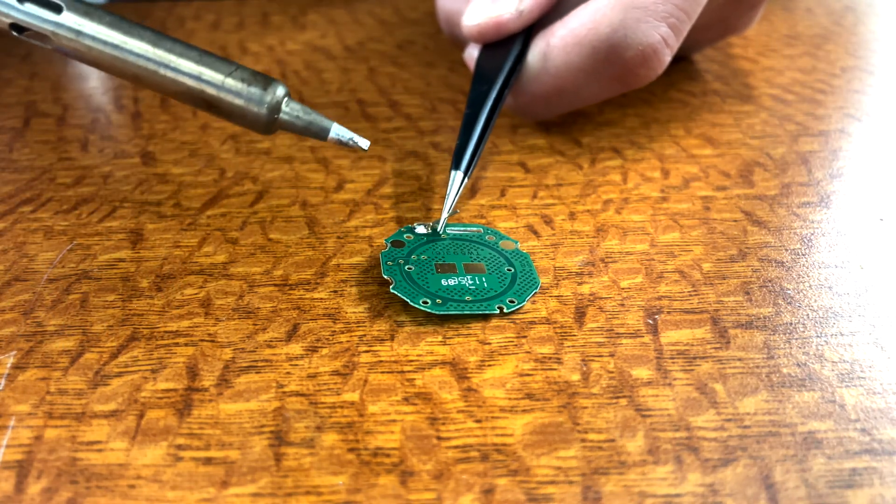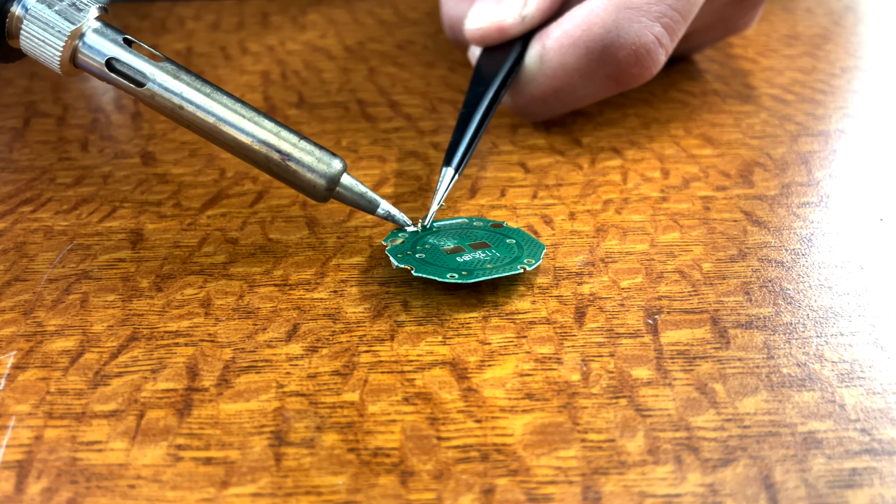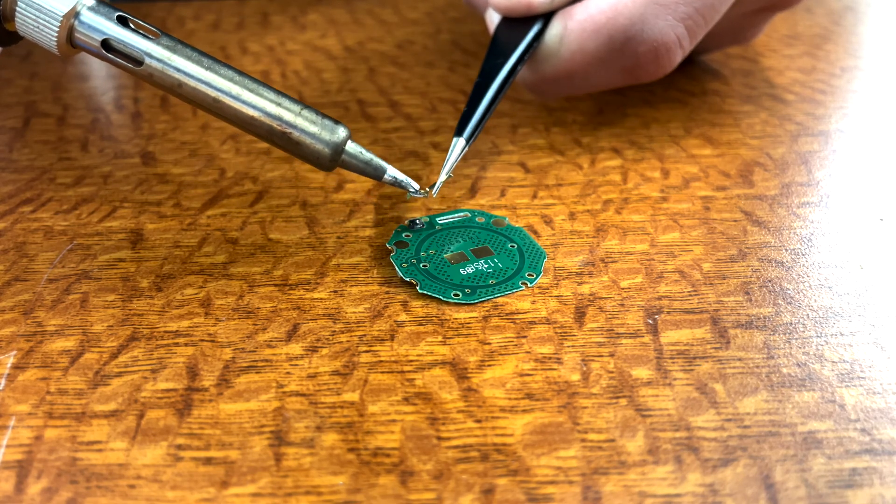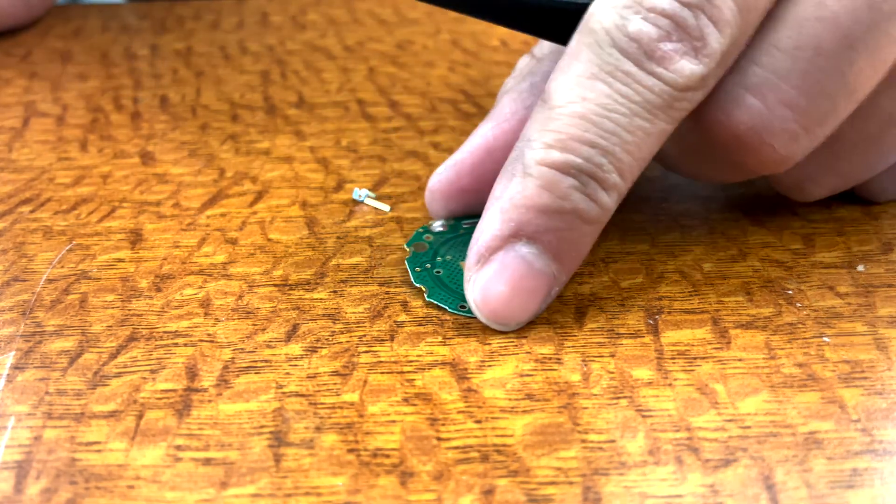First, firmly grasp the metal buzzer connector using your tweezers. Then, heat the blob of solder at the base. The solder will melt, releasing the buzzer connector from the board. Set the buzzer connector aside, and then set aside the original quartz movement. You won't be needing it anymore.